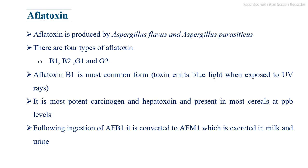Aflatoxin is produced by Aspergillus flavus and Aspergillus parasiticus. There are four types: B1, B2, G1, and G2. Aflatoxin B1 is the most common form; the toxin emits blue light when exposed to UV rays. It is the most potent carcinogen and hepatotoxin, present in most cereals at PPB levels. Following ingestion of AFB1, it is converted to AFM1, which is excreted in milk and urine.